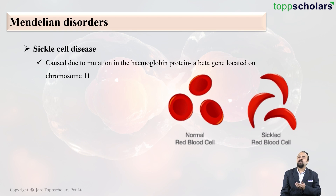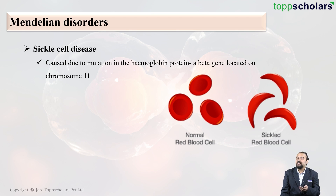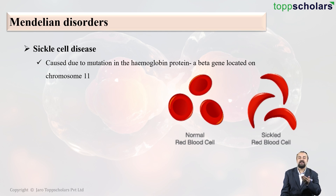Now let us talk about sickle cell anemia. It is caused by a mutation in the haemoglobin beta gene located on chromosome 11. As you can see in the diagram, normal blood cells are round, whereas when oxygen concentration is very low, the red blood cells in sickle cell disease become sickle-shaped. These cells do not have enough haemoglobin-carrying capacity and also tend to get lodged in the circulatory pathways.